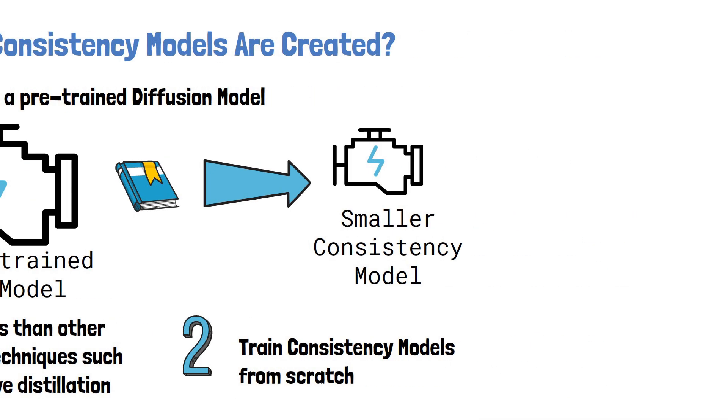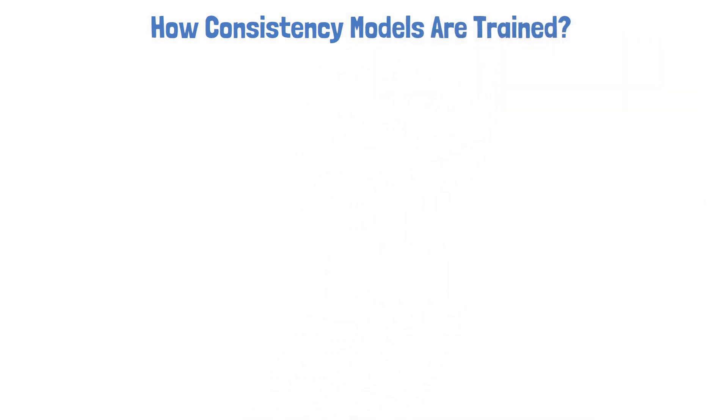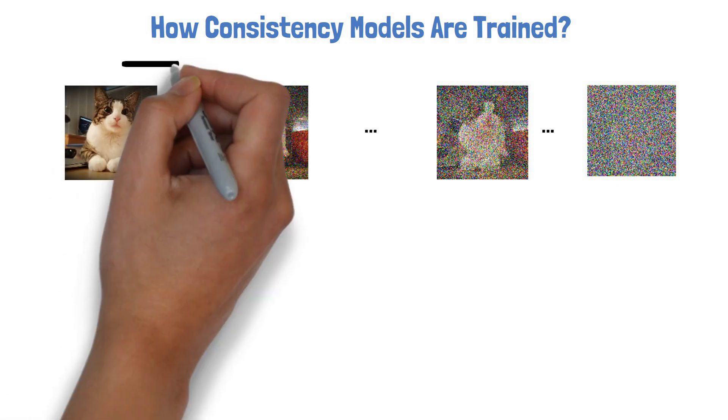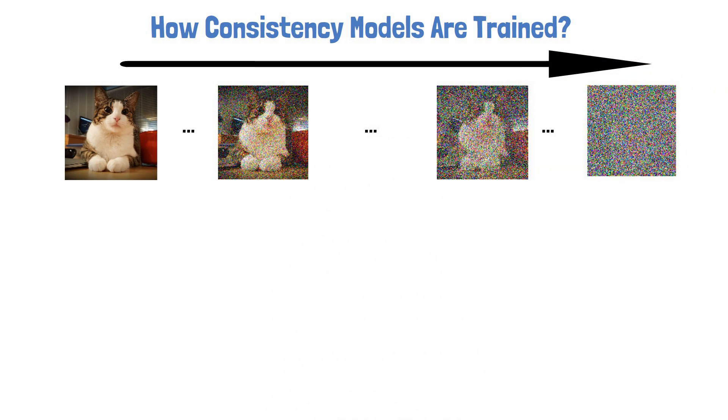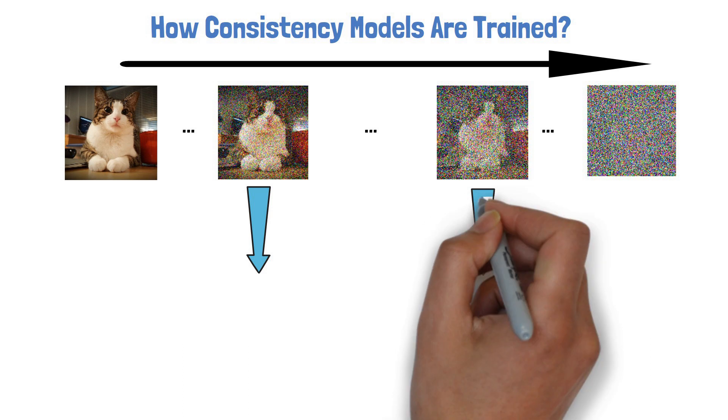Next we'll try to get some intuition about the training process. So how consistency models are trained? Here is our cat again. In the training process, we have clear images, and we follow their destruction path to a complete noise. The training process looks at pairs of points in this path.